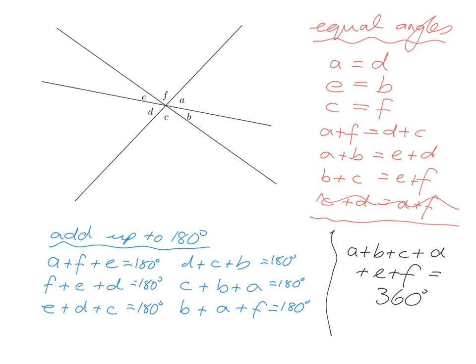For angles that add up to 180, we look at straight lines. On one straight line: a plus f plus e equals 180, and on the other side d plus c plus b also equals 180. On the next straight line: b plus a plus f equals 180, as does e plus d plus c. On the last straight line: a plus b plus c equals 180, and d plus e plus f equals 180.